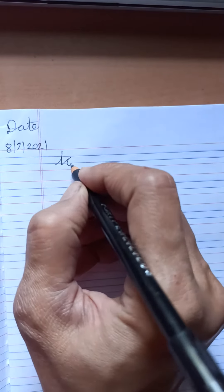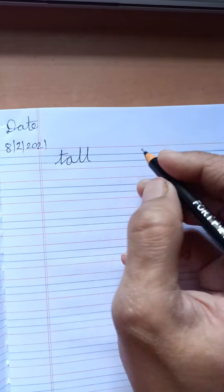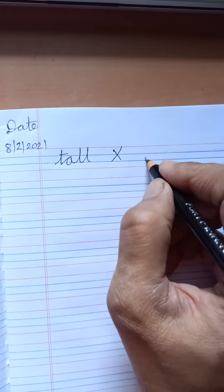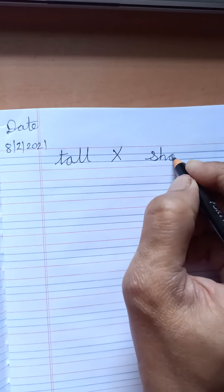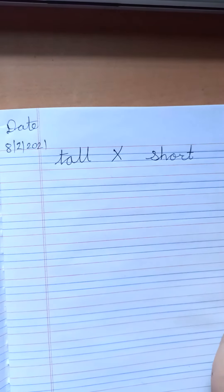We are going to learn opposite words. And today's opposite word is T-A-L-L tall. Opposite S-H-O-R-T short.